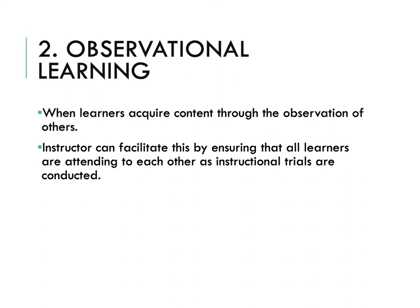Observational learning is an effective as well as efficient way of teaching. Observational learning occurs when learners acquire content through the observation of others. For example, when learners in a small group each have different content targeted for instruction during a lesson, each member of the group may acquire the information taught to the other members, whether it is targeted or non-targeted. Teachers can facilitate this by ensuring that all learners are attending to each other as instructional trials are conducted. The teacher may provide an attentional cue by saying, 'Everyone look.'